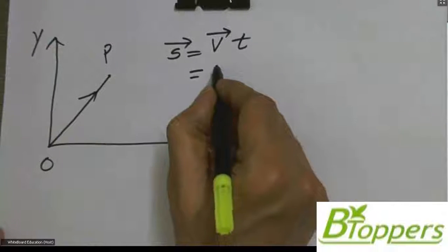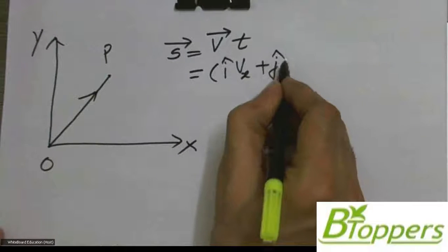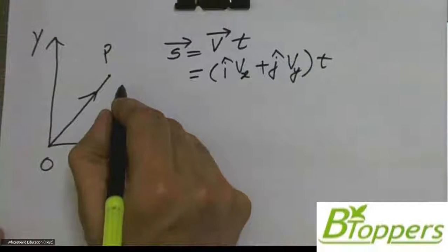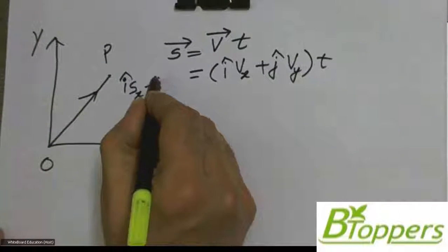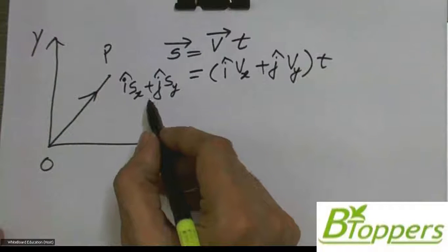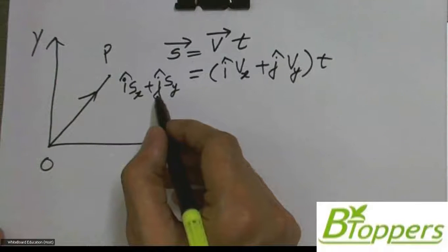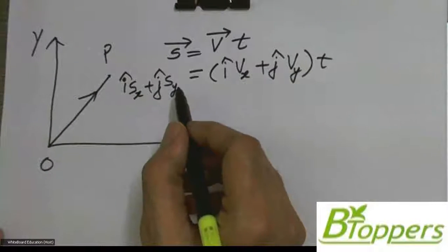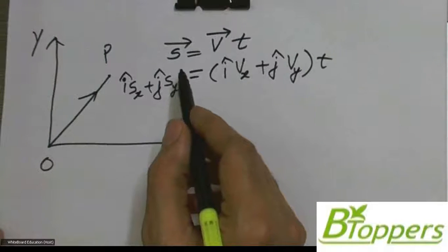For motion in the x-y plane, the velocity v̄ can be written as i-cap times vx plus j-cap times vy. The displacement vector can be written as i-cap times sx plus j-cap times sy. Here i-cap is the unit vector along the positive x-axis and j-cap is the unit vector along the positive y-axis. sx and sy denote the two rectangular components of the displacement vector parallel to the x and y axes.